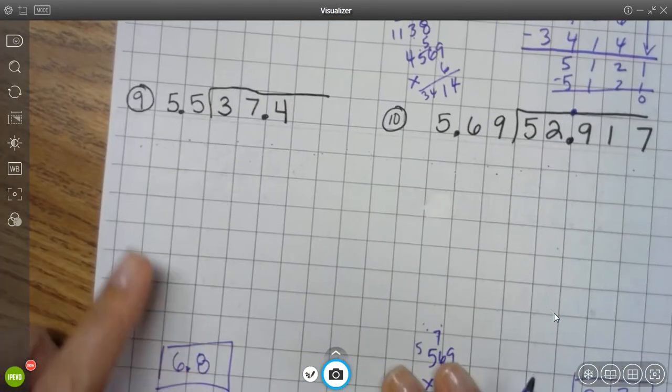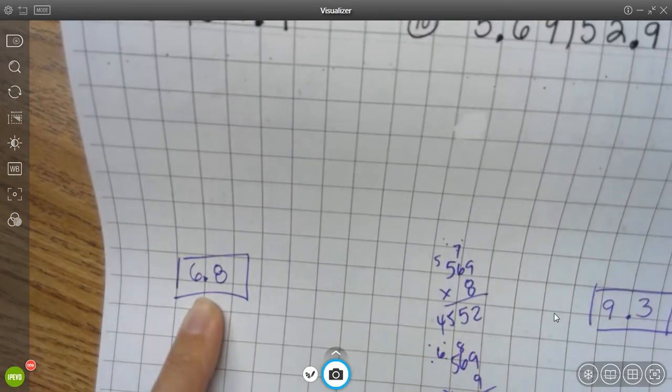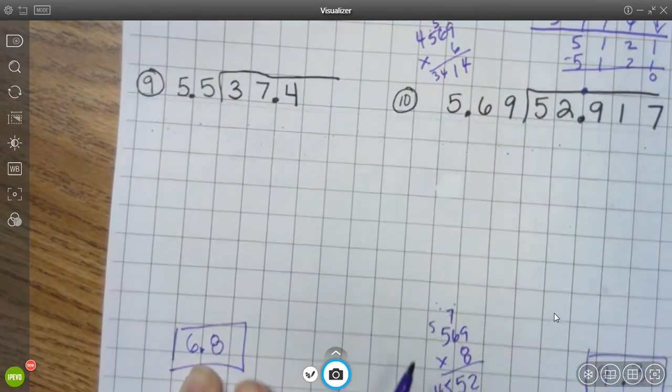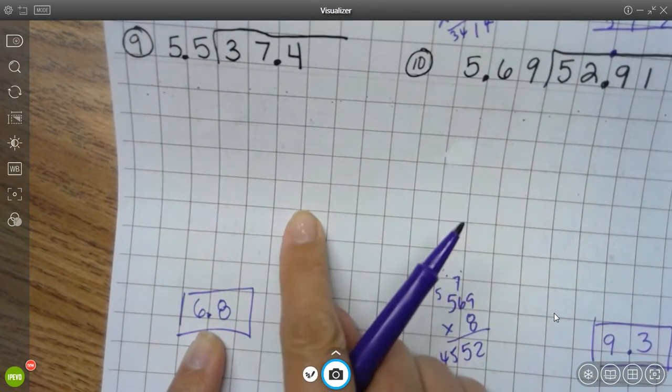Alright. Number 7. Or, sorry. Number 9. I'm not going to do it, but here's the answer. 6 and 8 tenths. So, check your work in your calculations. If you don't have this answer, go back and see where you went wrong. Okay?